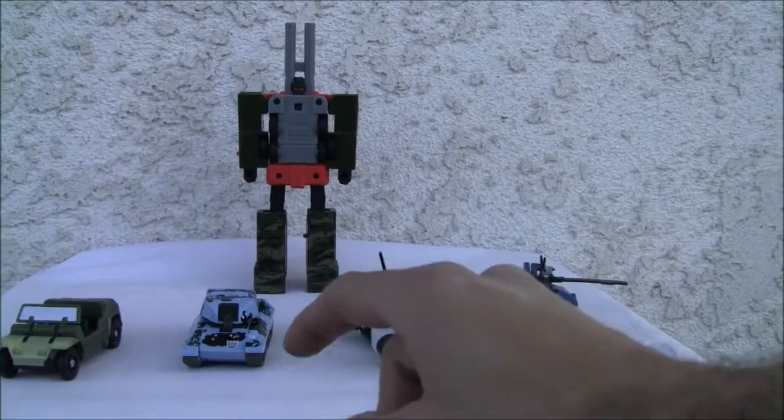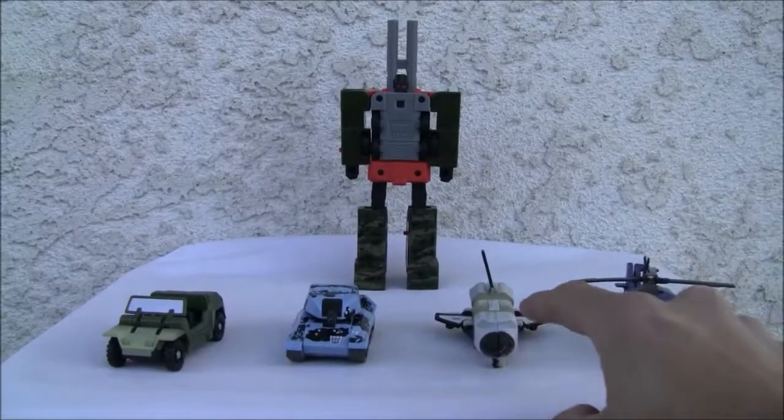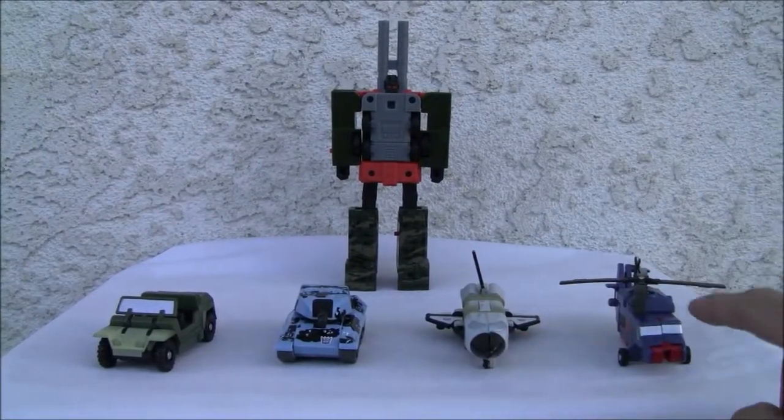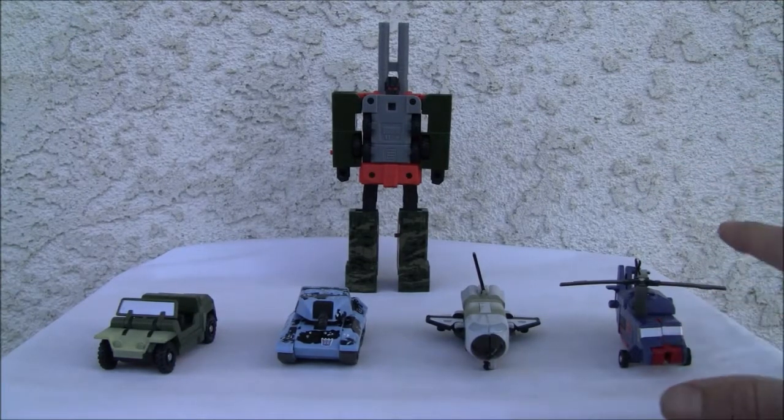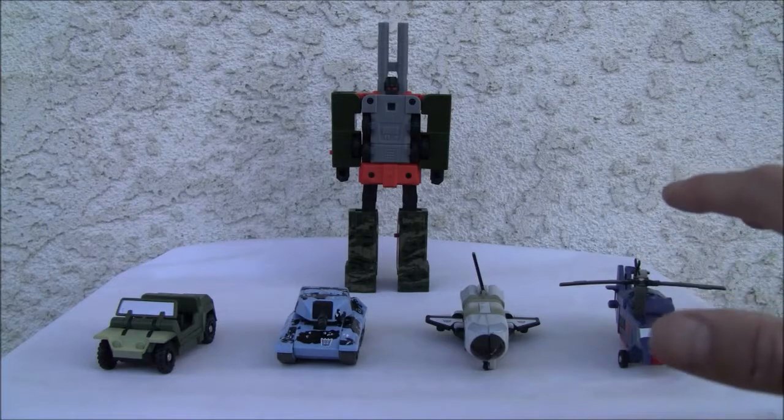We've got Roll Bar, and what's this guy's name? Armor Hide, Mover, and Rotor. These are Scramble City, so they're interchangeable. You can select whatever limbs you want.